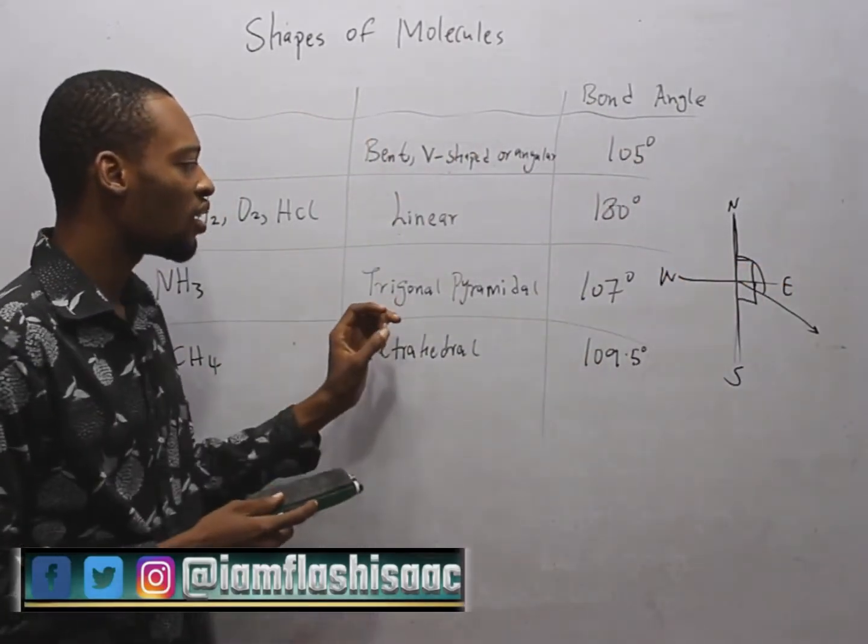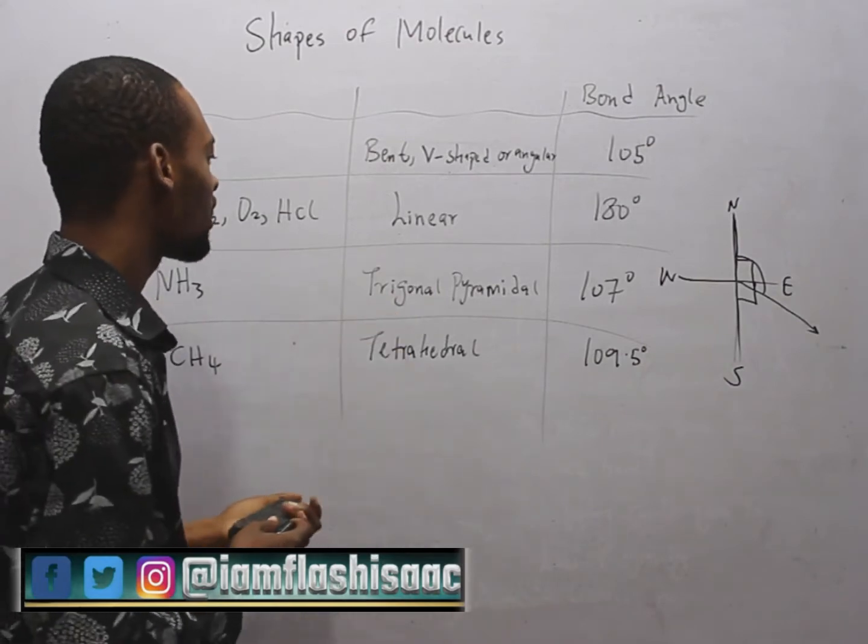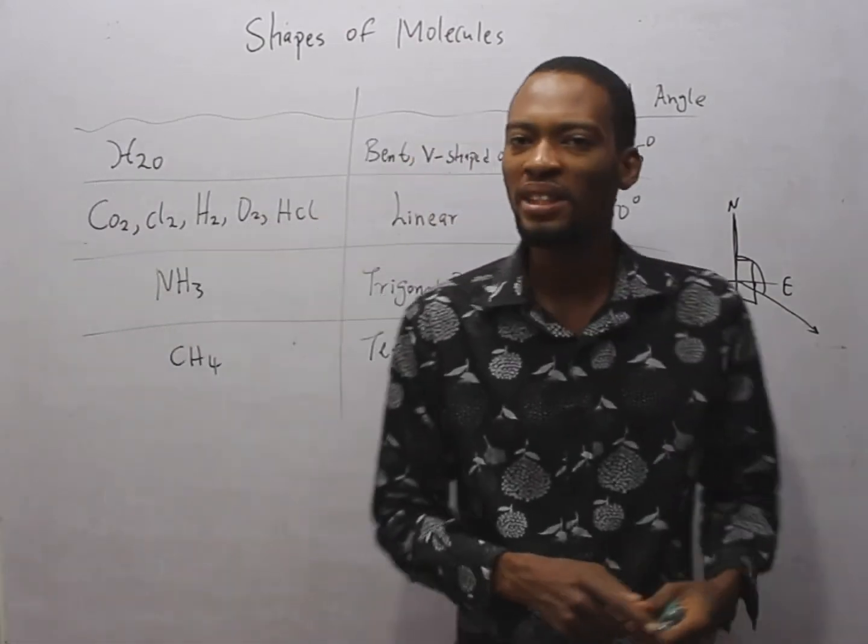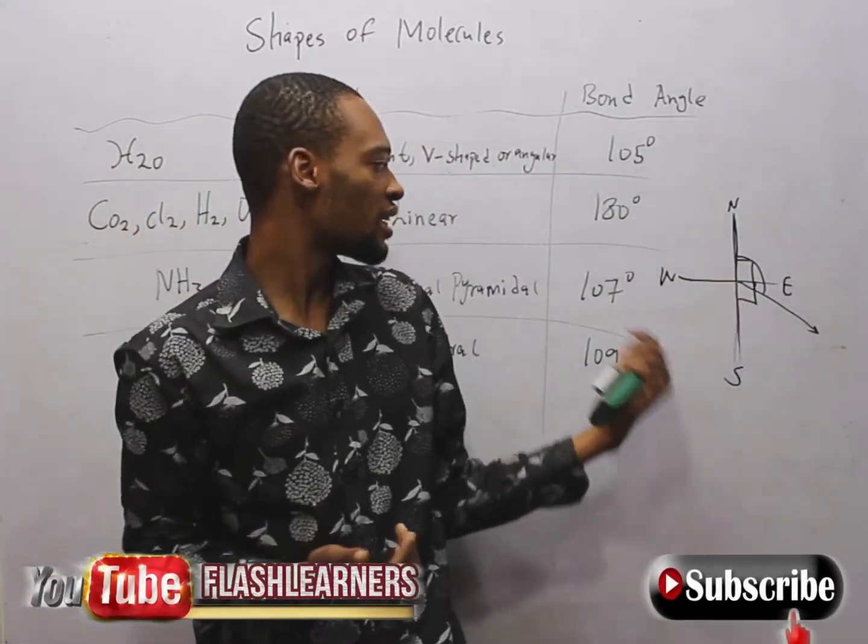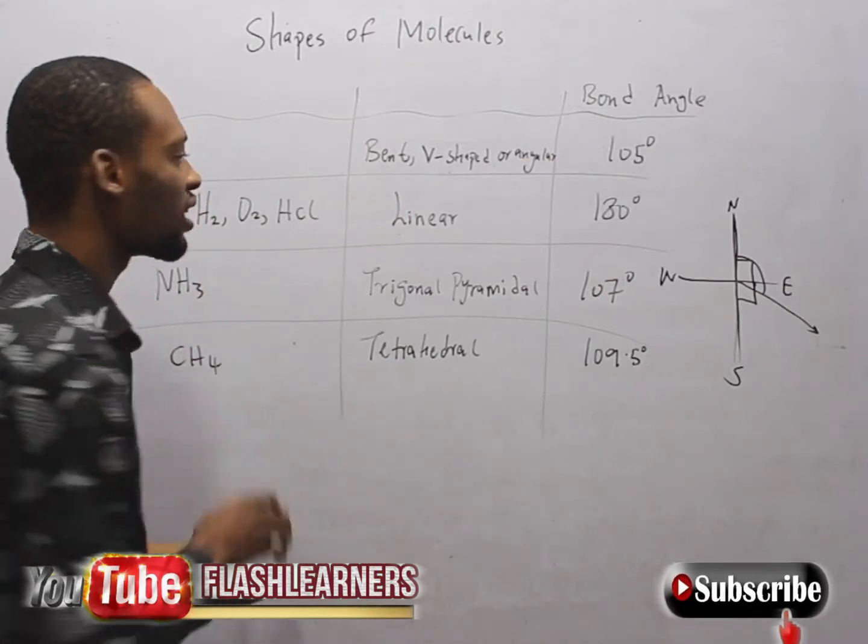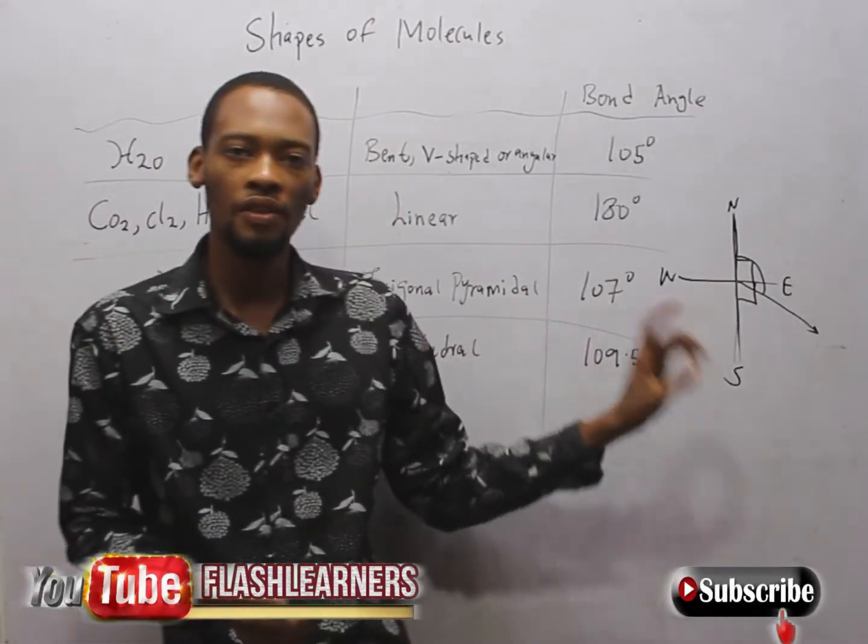Ammonia is trigonal or pyramidal in shape. Trigonal, pyramidal. Trigonal means three. It bends into three. So that is the shape of ammonia. And the bond angle is 107 degrees.